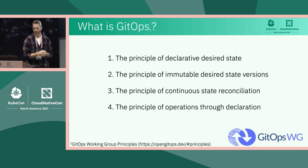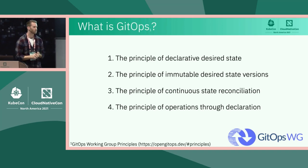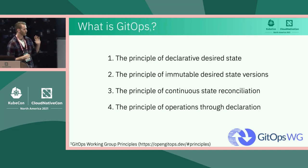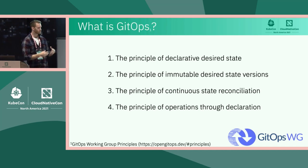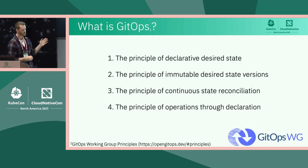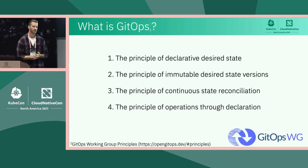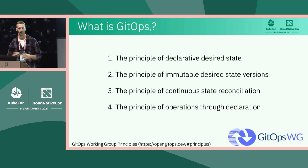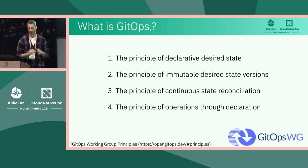The last principle is operations through declaration. This really resonates with me: if you're doing GitOps, you're going through these principles — you're not applying things directly into a cluster. You're always following these principles so that if someone manually applies something into a cluster, the GitOps reconciliation can detect that, say this is not supposed to be here, and remove it if you have the correct policies in place. That's pretty powerful.